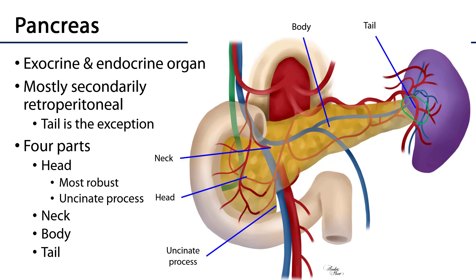There are four major parts to the pancreas. There is the head of the pancreas, which is the most robust part. It's through the head that the common bile duct, the main pancreatic duct, and the accessory pancreatic duct run and pierce through the wall of the second part of the duodenum to secrete into the lumen. The head also includes a small process called the uncinate process, found just posterior to the superior mesenteric artery and superior mesenteric vein — tucked in posterior to the SMA and SMV.